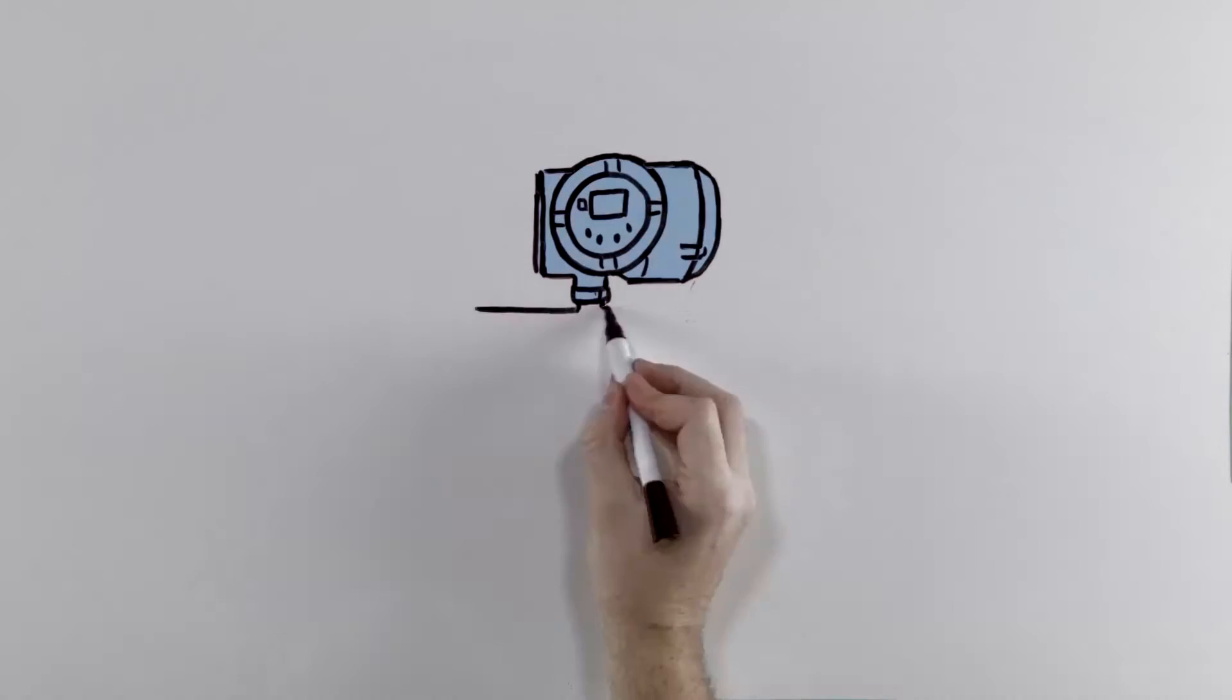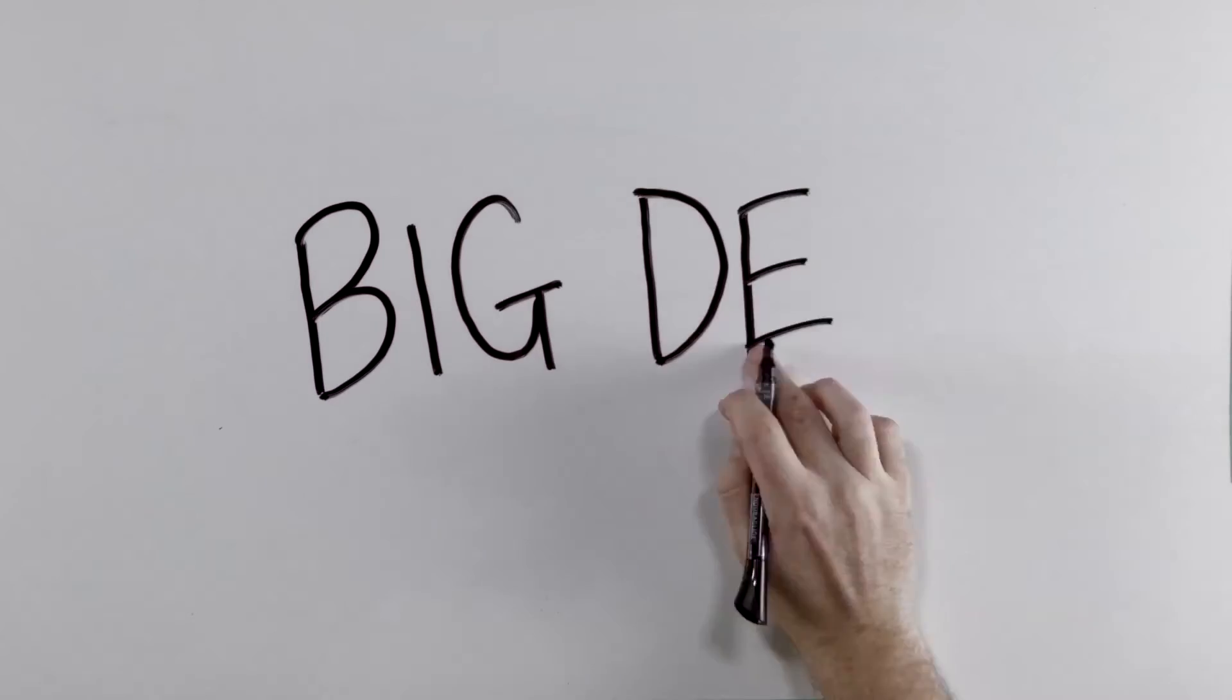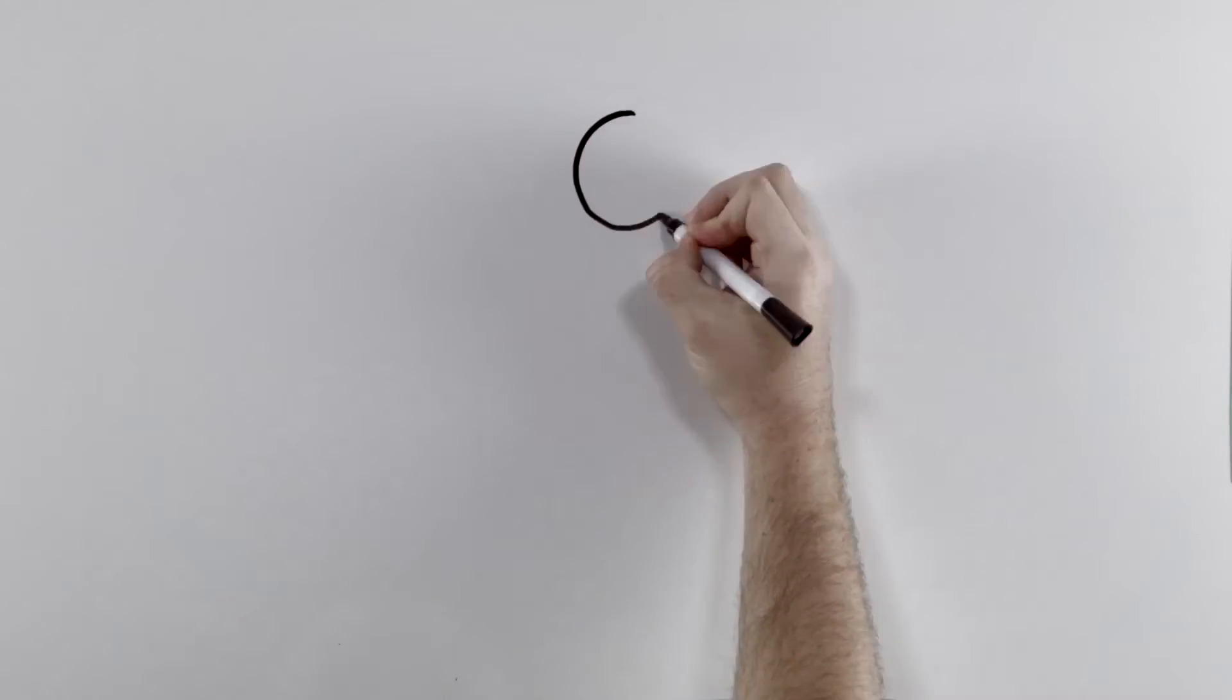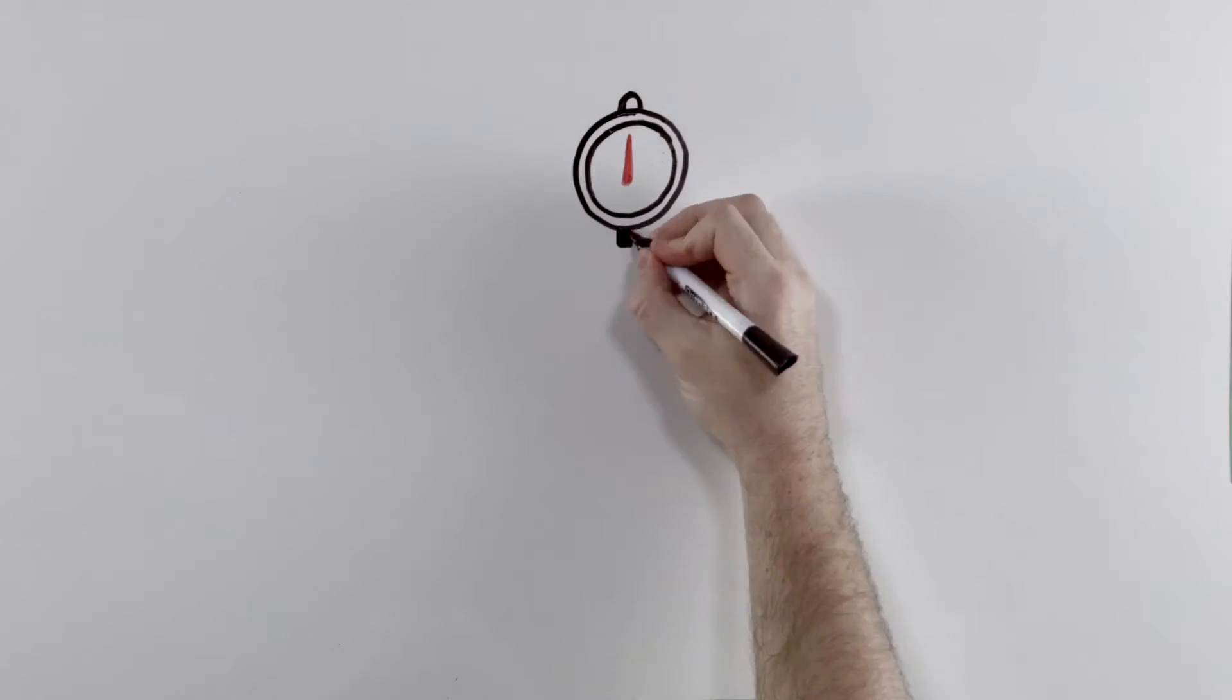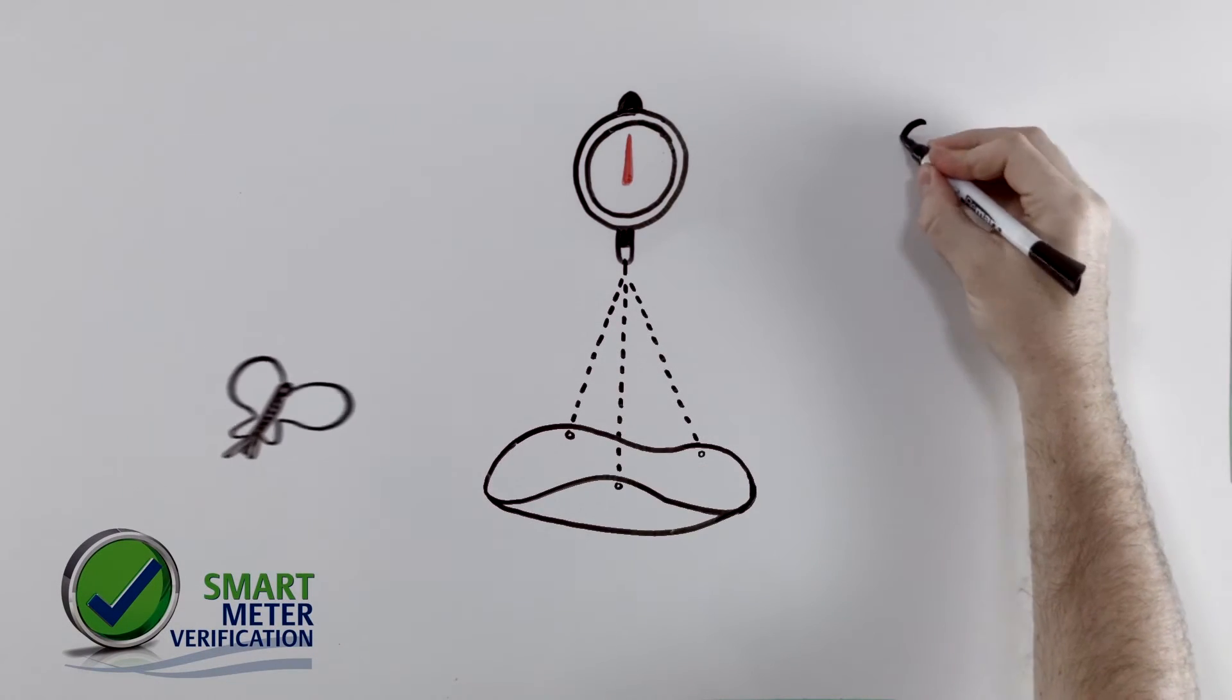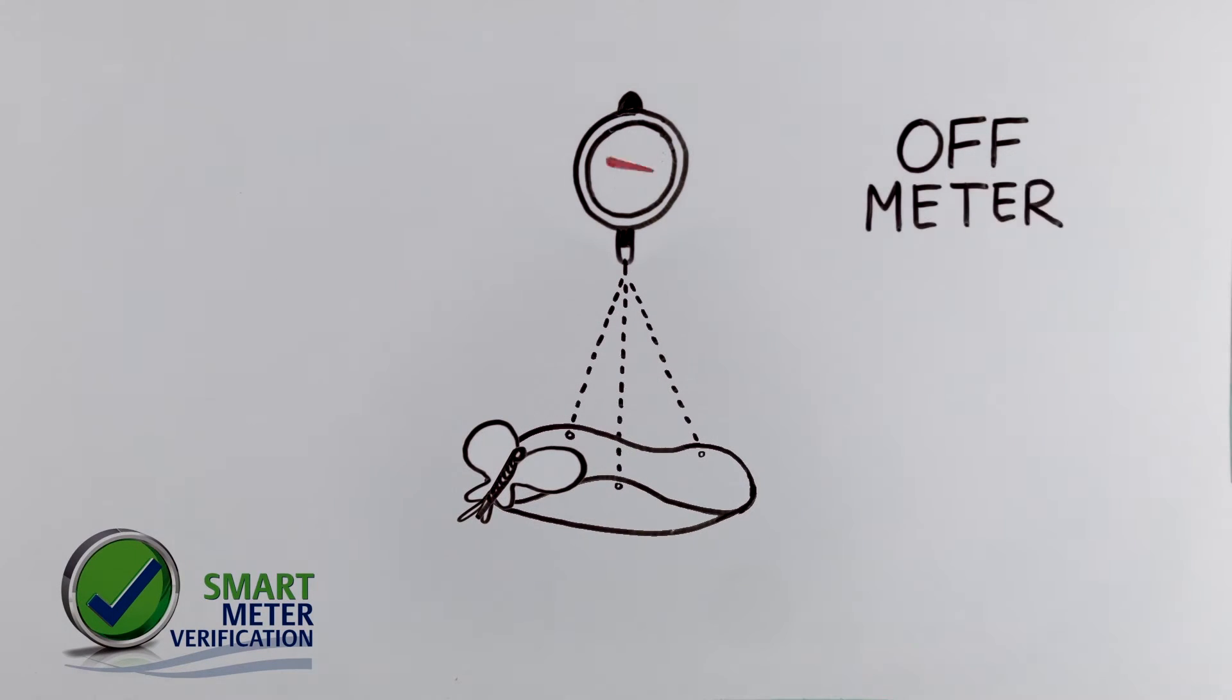At low flow, meter zero is an important component of flow measurement accuracy. Tina knows that meter zero is a big deal in a lot of her applications. Unless she has a unit with smart meter verification, zeroing the meter is the easiest thing Tina can do. But if it's not done right, zeroing the meter can make things much worse.